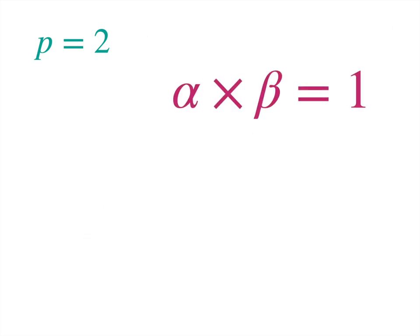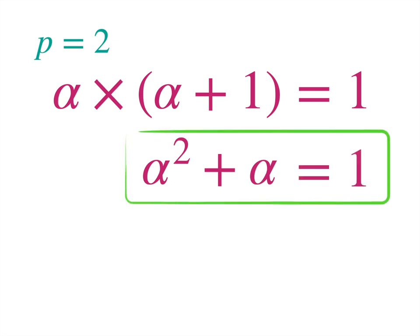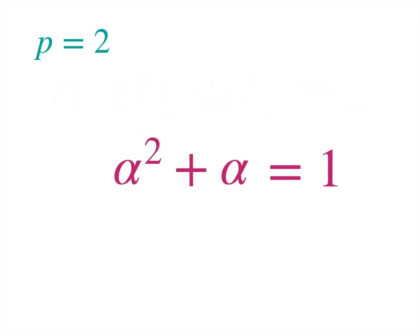So, if I go back to writing beta as alpha plus 1 again, then this says alpha lots of alpha plus 1 is 1, which is the same as saying alpha lots of alpha, so alpha squared, plus alpha lots of 1, so just alpha, add to 1. So this here is just another way of wording my requirement for alpha. I've just written alpha times beta equals 1 in a slightly different way.